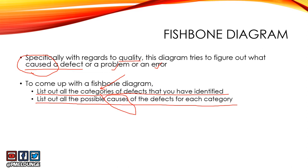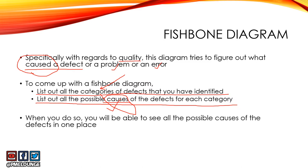For each category of defects, it is possible that one cause led to all five defects in that category, or multiple issues caused defects across one category. Whatever the case, you need to list out all possible causes for each category so you have all the causes and defects in one place.